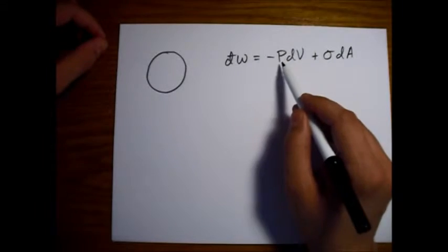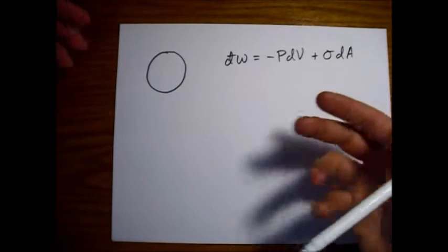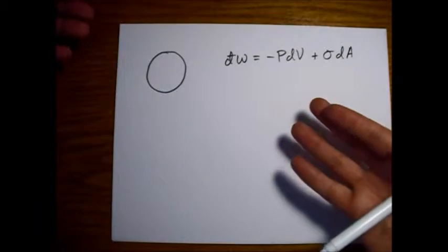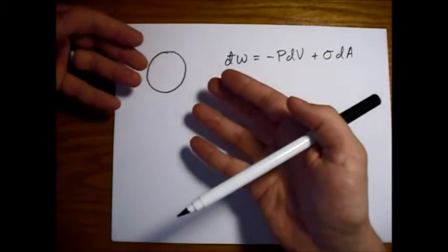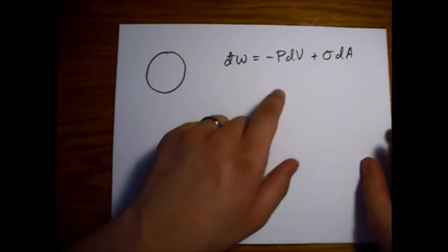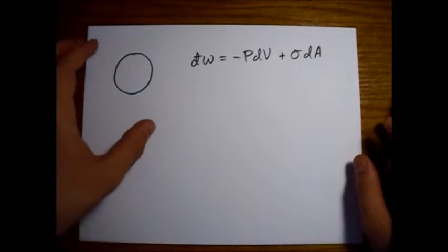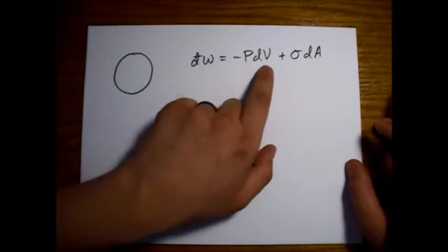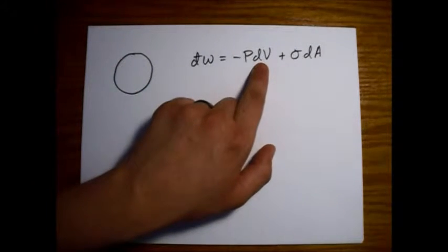The pressure, basically, to do work on the system, we make the volume smaller rather than larger. So we have this minus sign, we're increasing the internal energy when we make the volume smaller.